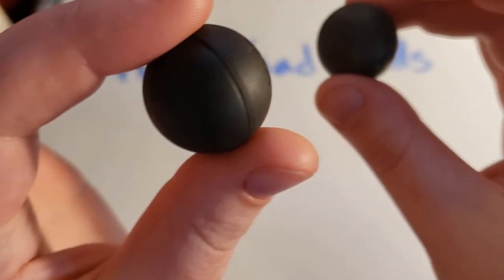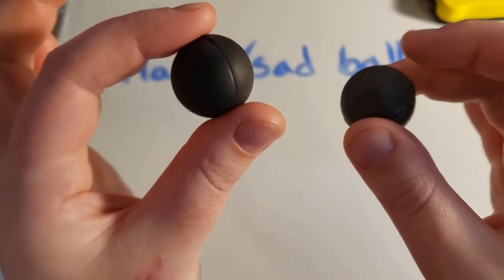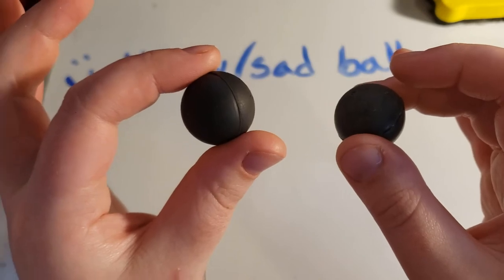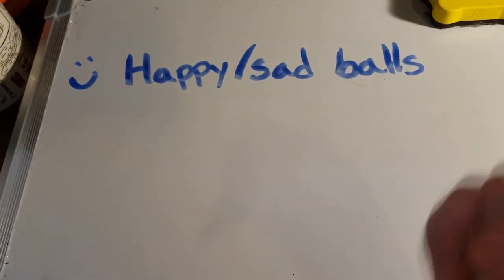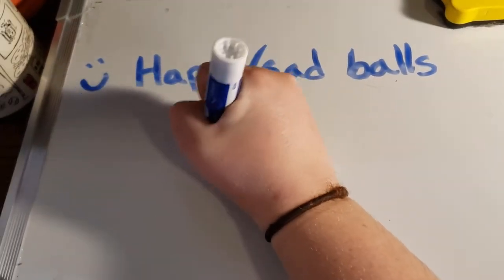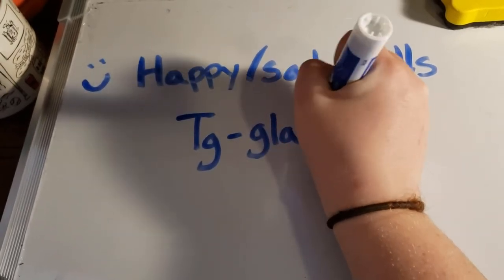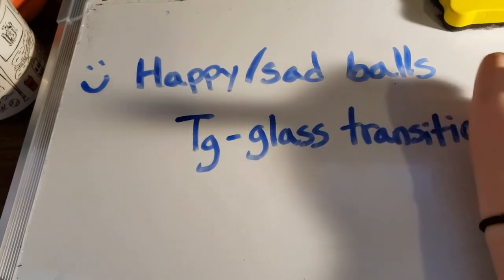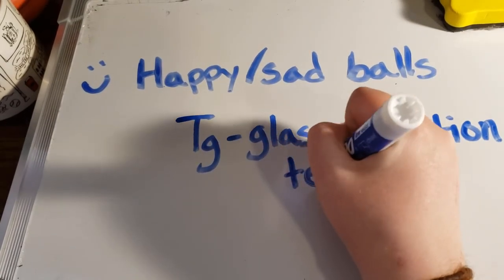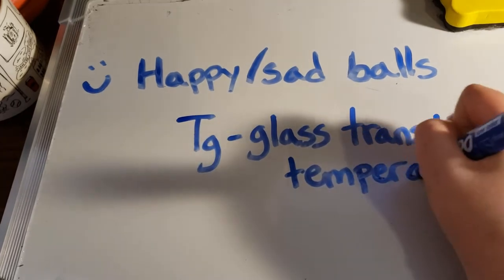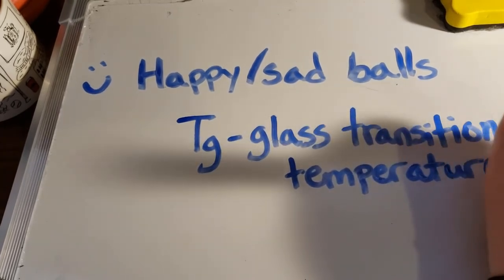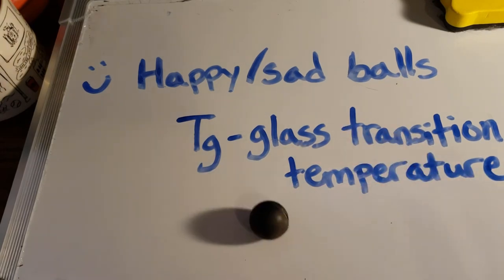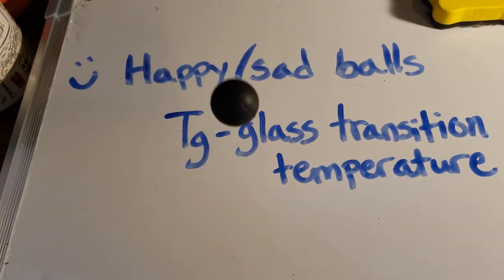These two balls are made out of polymers that are slightly different, and they're different in a very important quantity that we call TG, or glass transition temperature. The glass transition temperature is the temperature at which the system changes from a rubbery state — which is bouncy and happy — to a more glassy state, which is harder and less bouncy.